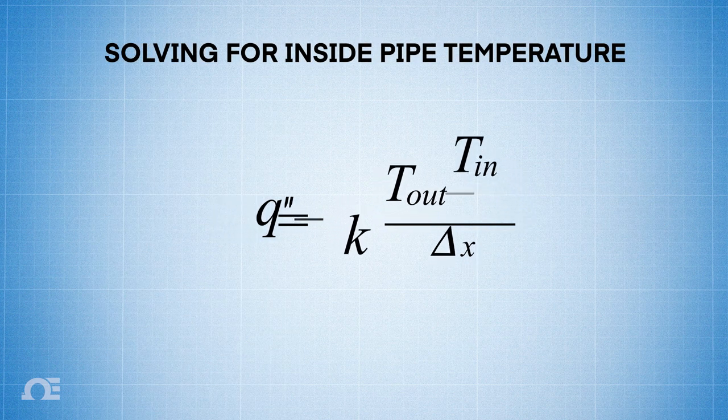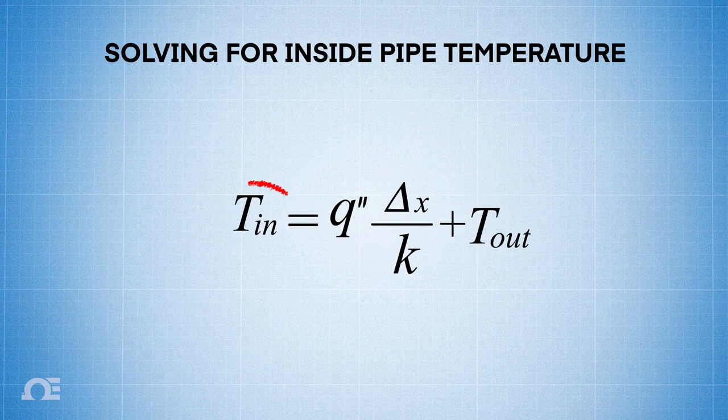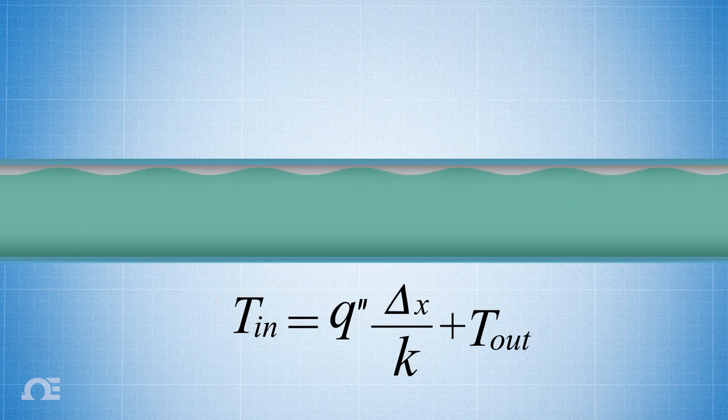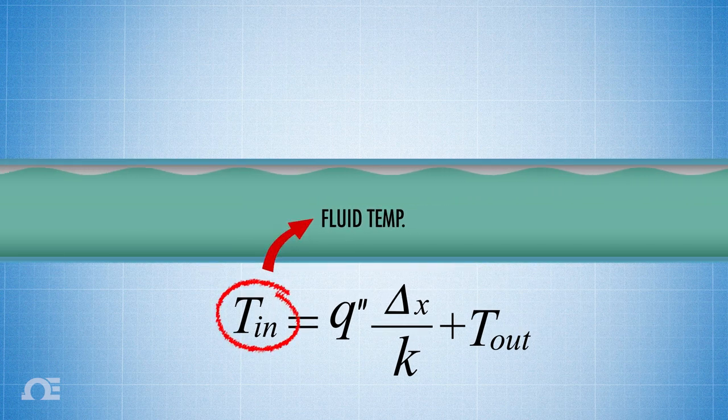So, if we rearrange that equation, we can solve for the temperature on the inside of the pipe. Now, we have a pipe with fluid moving through it, and that fluid is at temperature T in.